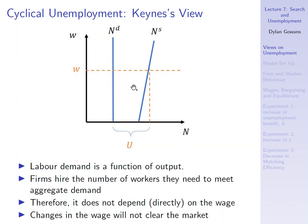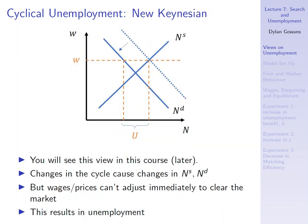The new Keynesian view is more popular today — and you'll see it later in the course. It says the labor market does look like what the new classicals described: a downward-sloping labor demand curve and an upward-sloping labor supply curve. The problem is that the wage just doesn't adjust quickly. If there's a shock to labor demand — maybe a productivity shock causing it to fall — the wage or real wage can't adjust quickly enough to restore equilibrium, and this causes unemployment.